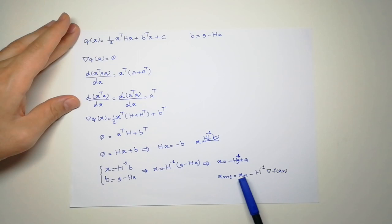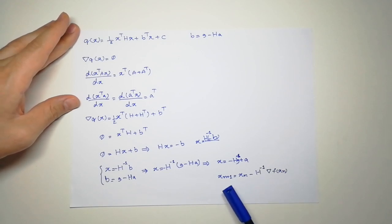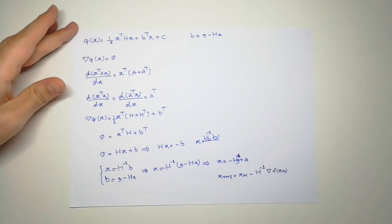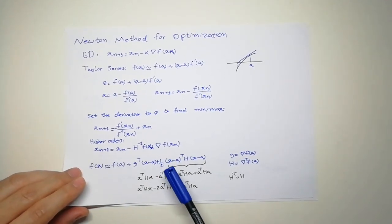our new point, a was the point that we started or approximated the function. So x new point is going to be the previous point minus H, so a is x_n minus inverse of H_n multiplied by g, which is the gradient of the function. This is exactly what we had here.